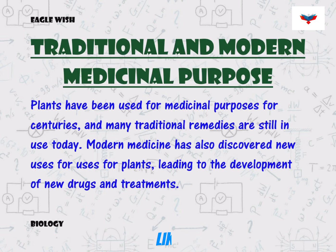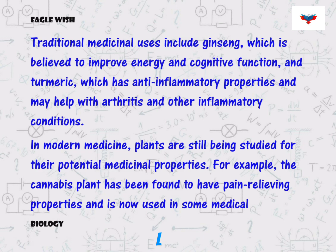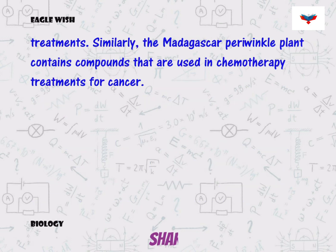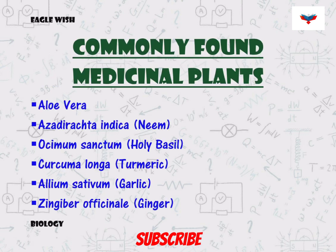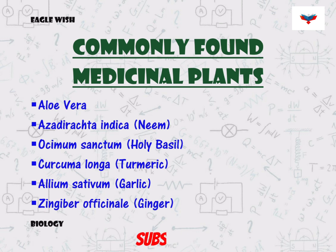We will also write about the purpose of traditional and modern medicinal plants in brief. After mentioning the purposes of medicinal plants, we will mention commonly found medicinal plants in our surroundings, which includes aloe vera, garlic, ginger, turmeric, etc.